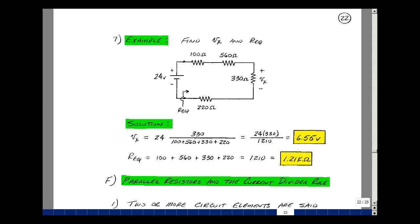What's R equivalent looking into these terminals? What's this going to be equal to? The series combination of 100, 560, 330, and 220, or 1.21 k. So you can replace this by a single resistor and solve for the current coming out of the battery. You can then calculate the life of the battery. And these are some examples of series resistance and the voltage divider rule.